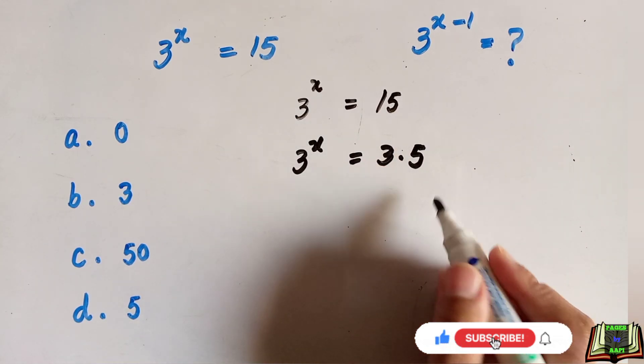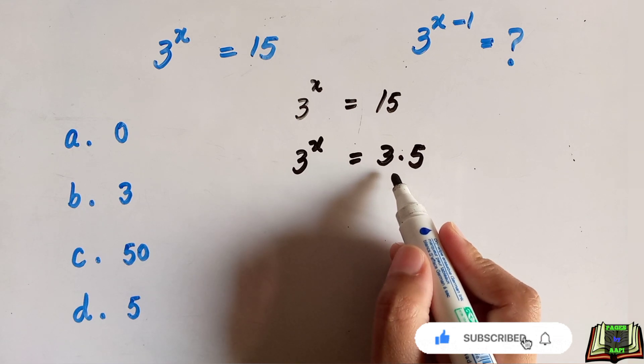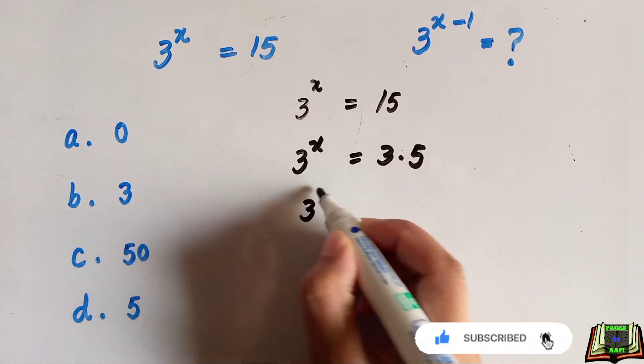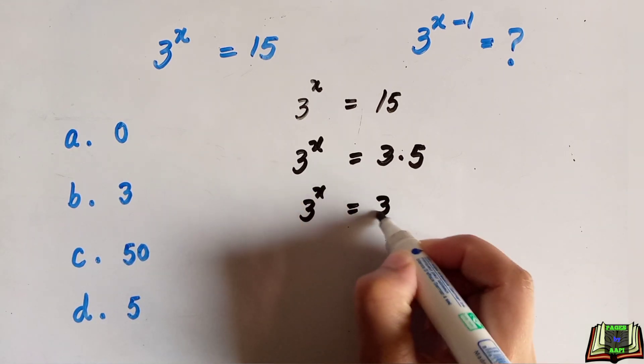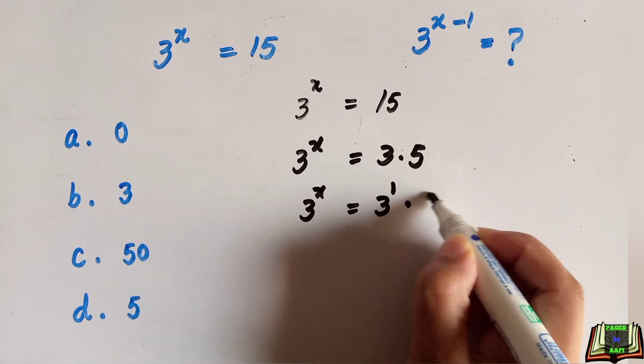Now we can write this 3 as 3^1, so 3^x = 3^1 × 5.